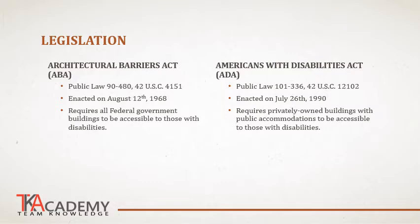The other act is the Americans with Disabilities Act, the ADA, which is probably more commonly known. This is public law, enacted at the federal level, and was put into place on July 26, 1990. The difference between the ADA and the ABA is that the ADA requires privately owned buildings with public accommodations to be accessible to those with disabilities. This really affects all buildings and the practice of architecture in general. Any building that has public access, whether it's privately owned or not, has to be designed to accommodate those with disabilities.